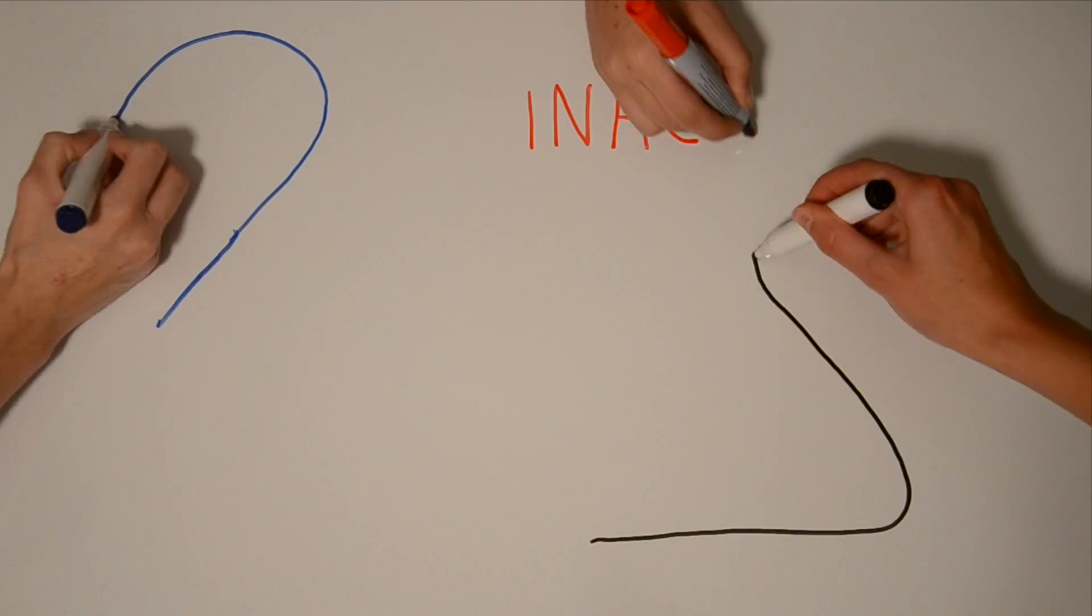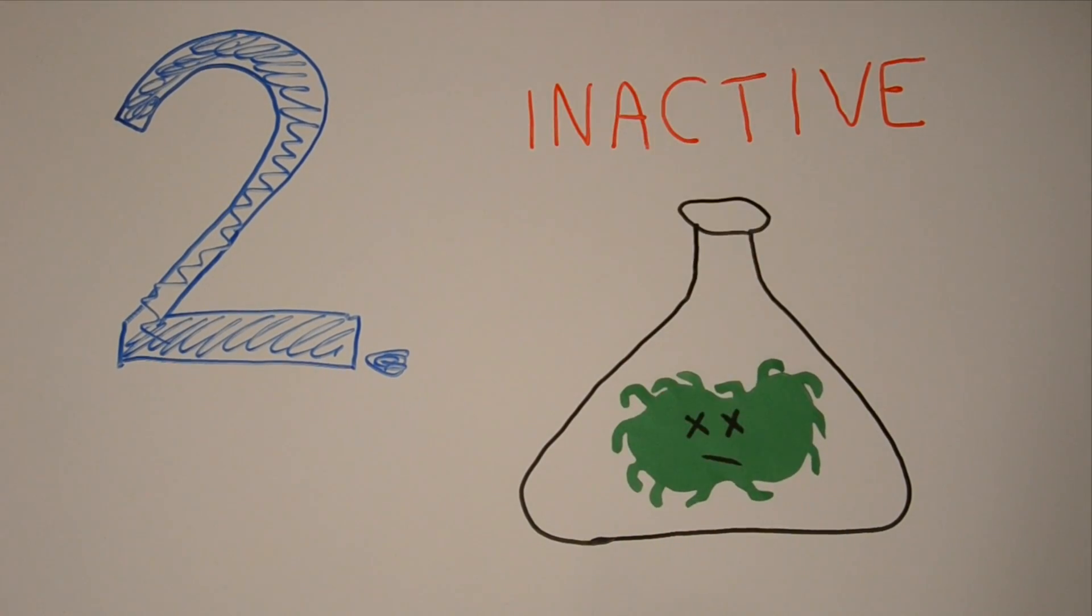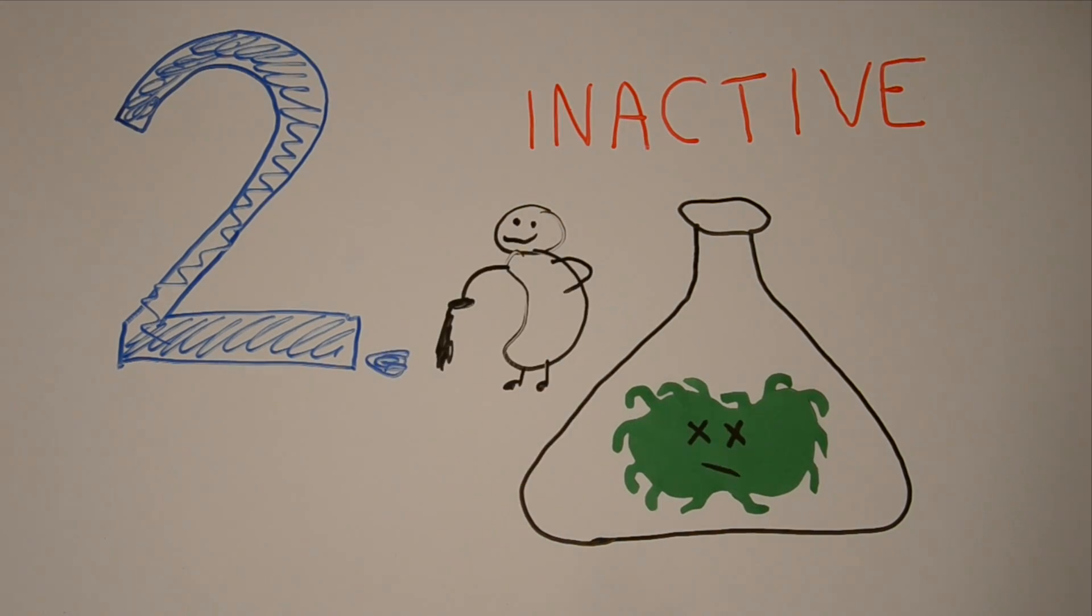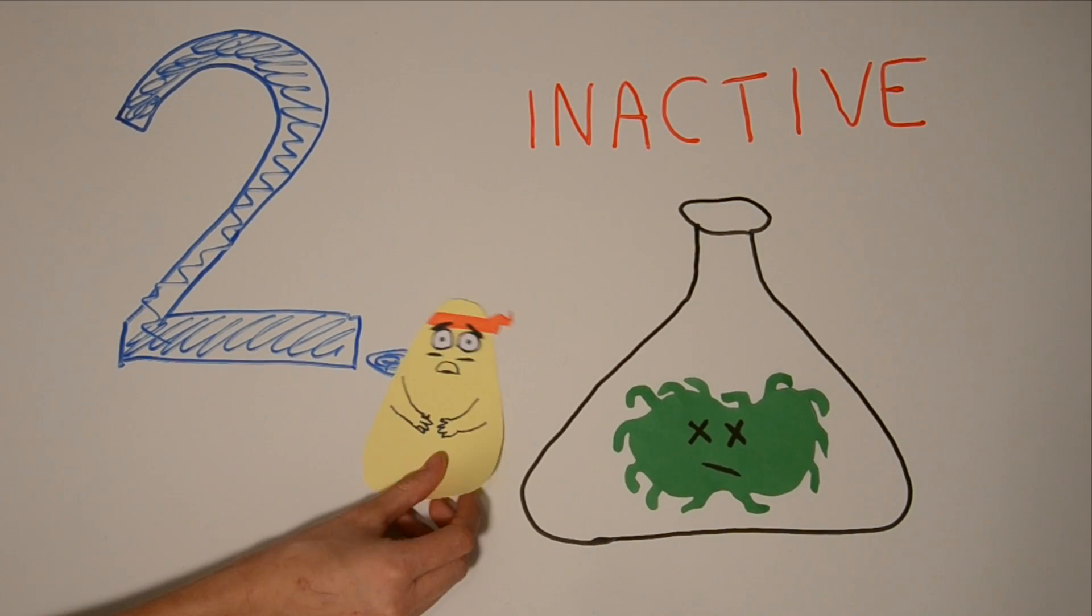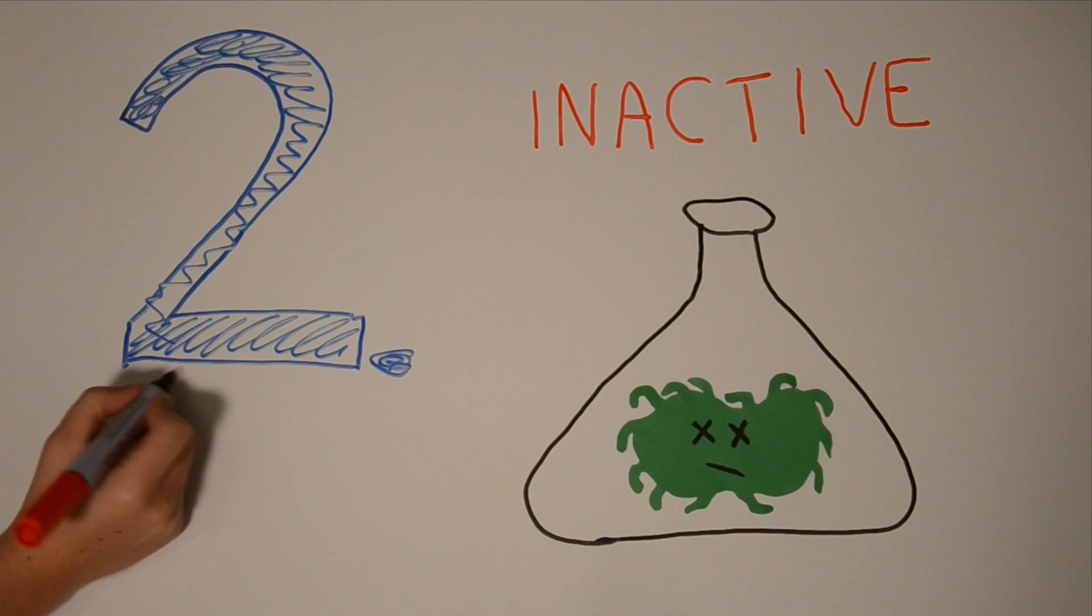The second kind are the inactive vaccines containing a killed pathogen. They are safer for immunodepressive persons, so can be given to for example the elderly. However, they do not trigger an immune response as well as life-attenuated vaccines. An example of an inactive vaccine is polio.